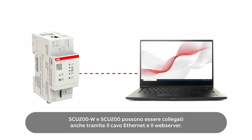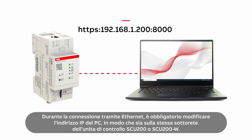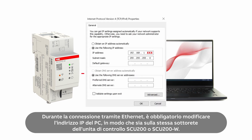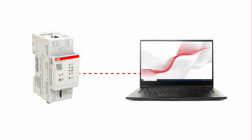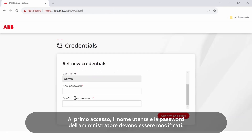The SCU 200W and SCU 200 can also be connected via Ethernet cable, and the web server can be accessible at the displayed IP address. While connecting through Ethernet, it is mandatory to change the IP address of the PC. For the first access, use the default username 'admin' and the password 'admin'.